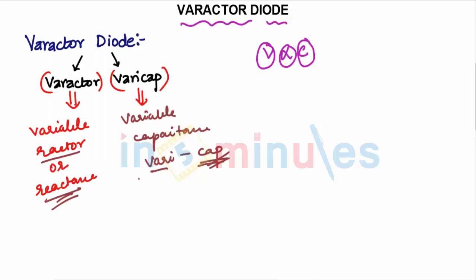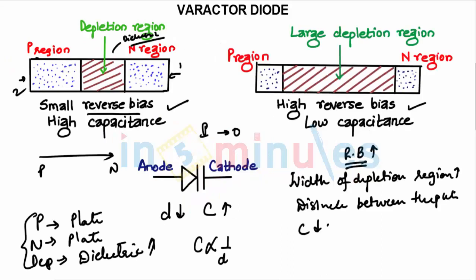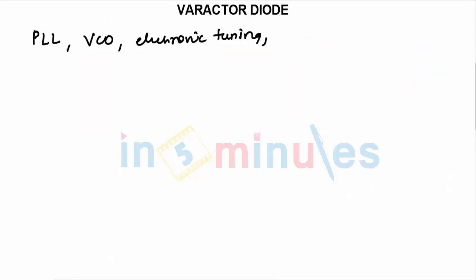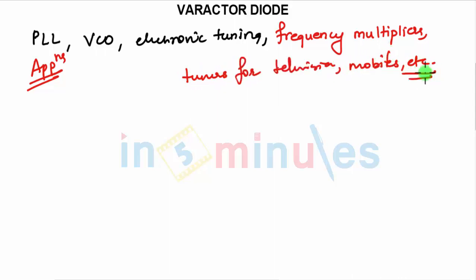To summarize: first understand the name — what varactor and varicap indicate. Then understand the basic operation of capacitance and how a reverse-biased P-N junction diode acts as a capacitor. Finally, know the applications of the varactor diode: electronic tuning, frequency multipliers, television tuners, and mobile devices.